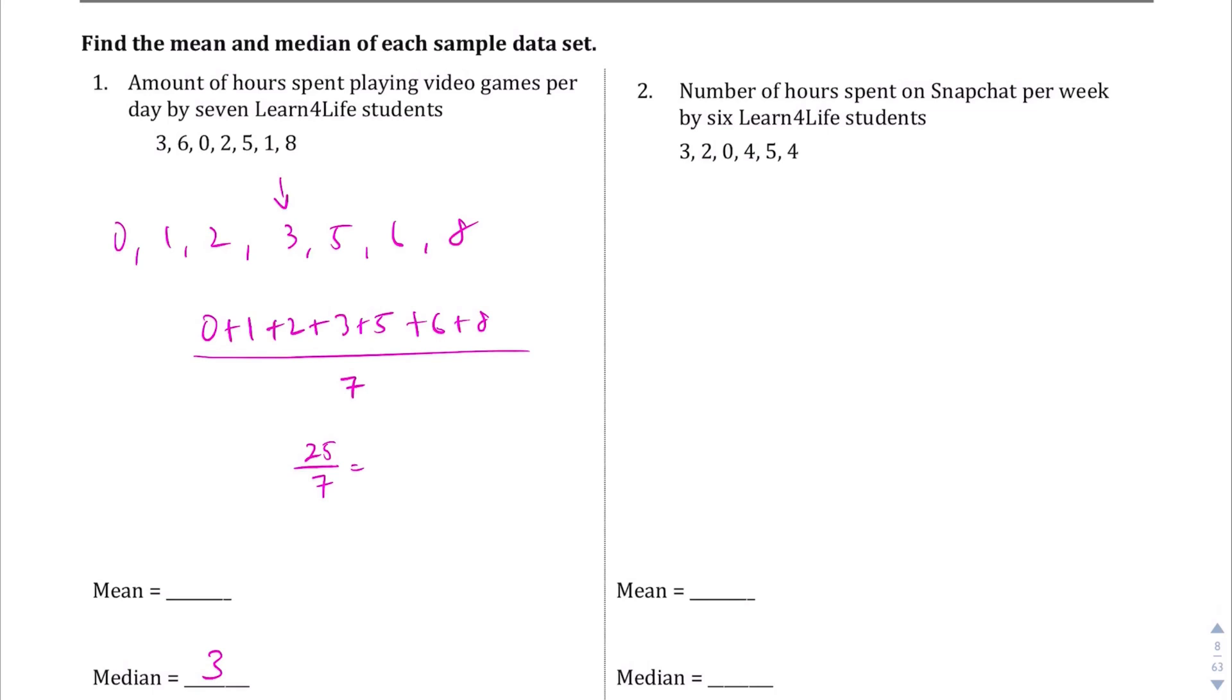And if you punch that into a calculator, you can do that with me, you're going to get about 3.57. So, our mean is going to be 3.57. Okay, that's question number 1.